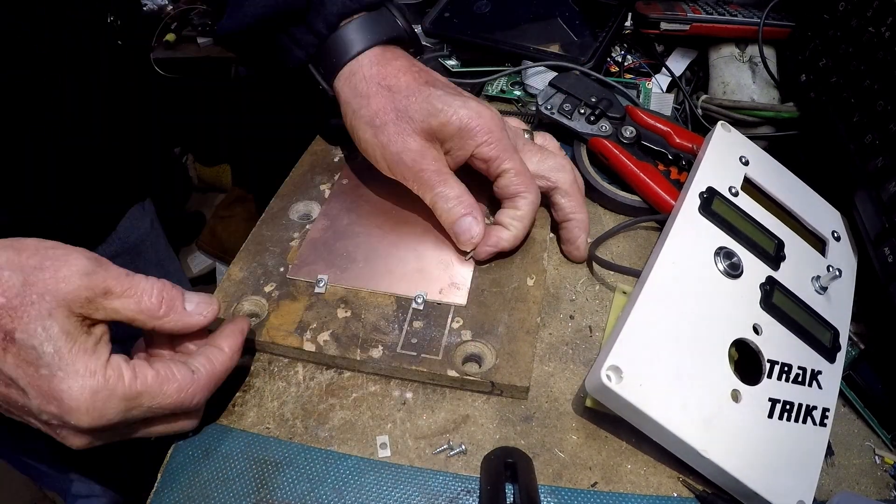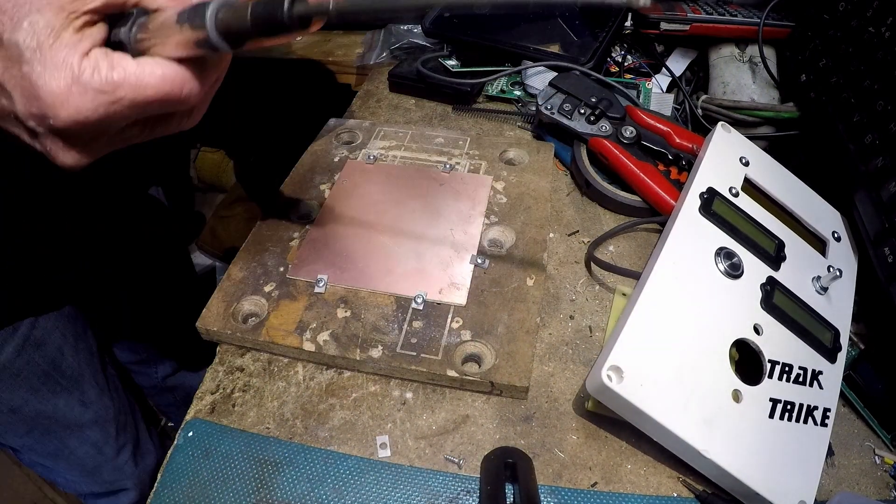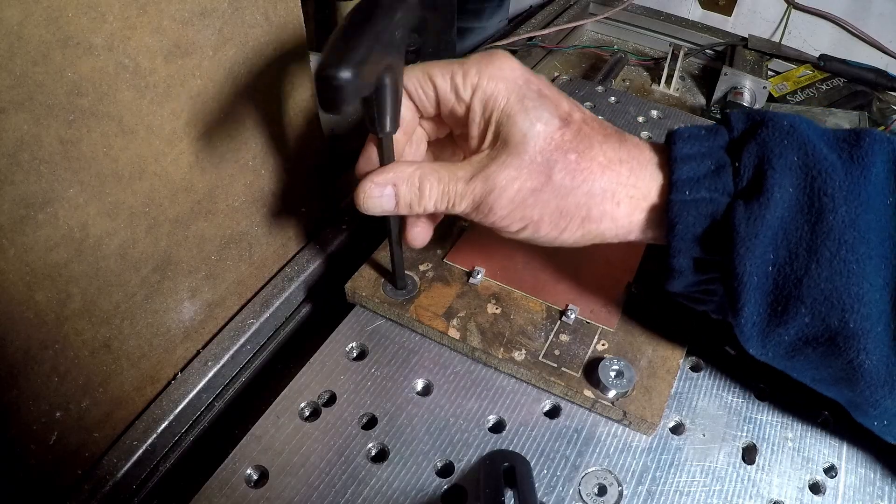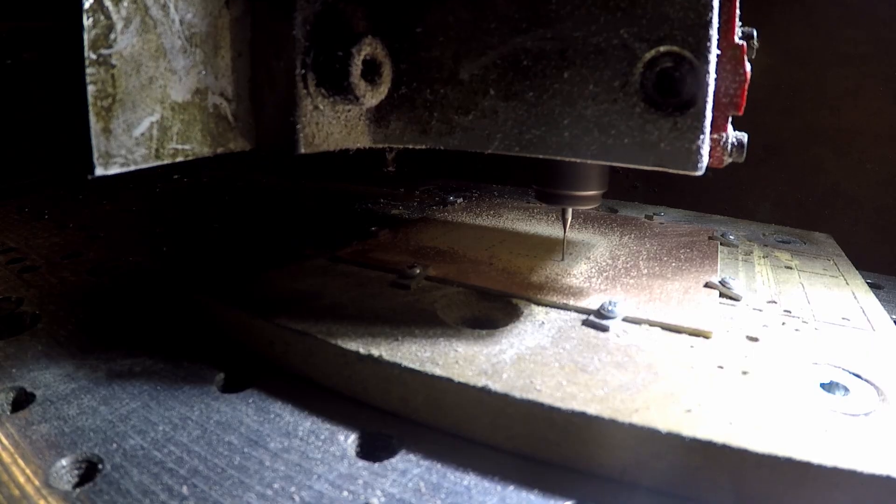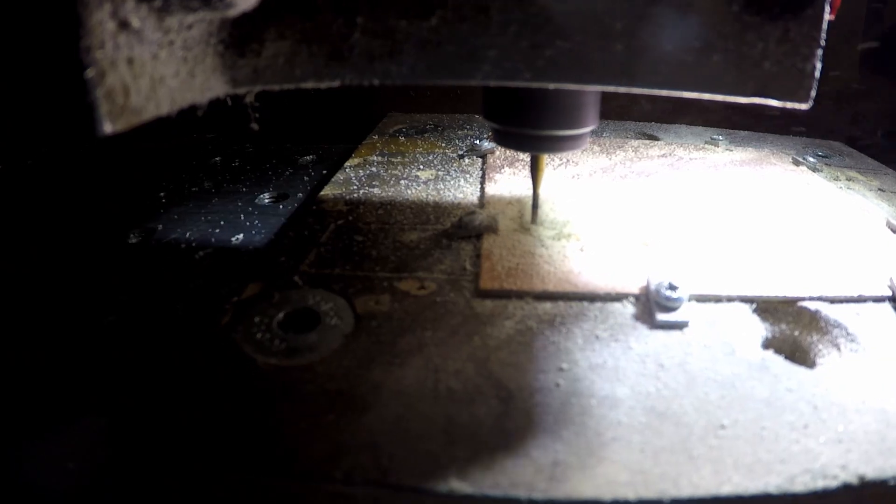Got a blank onto a piece of sacrificial board, screwed it down, bolted the workpiece onto the CNC router bed, and the CNC router, as usual, milled, drilled, and cut out.